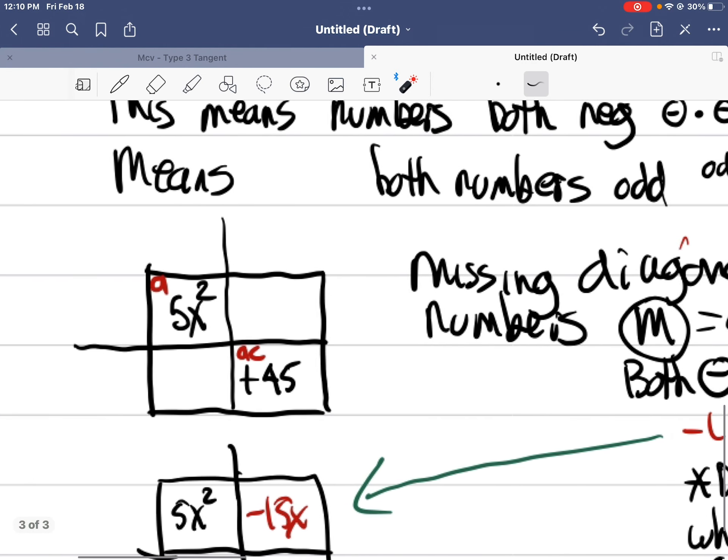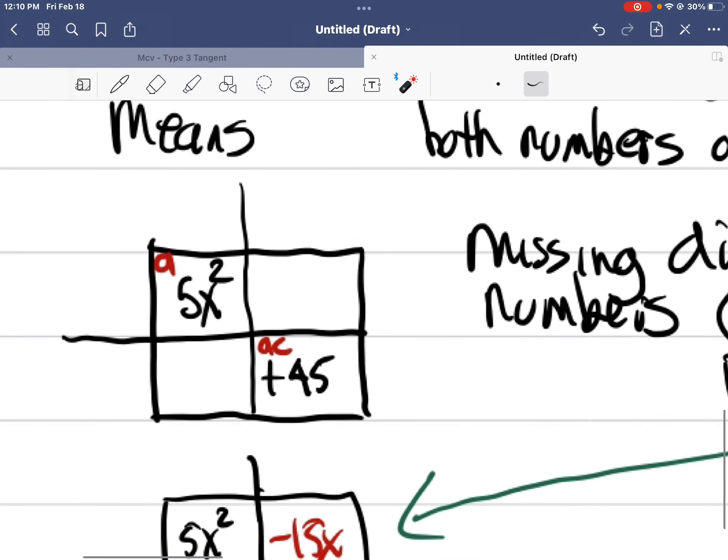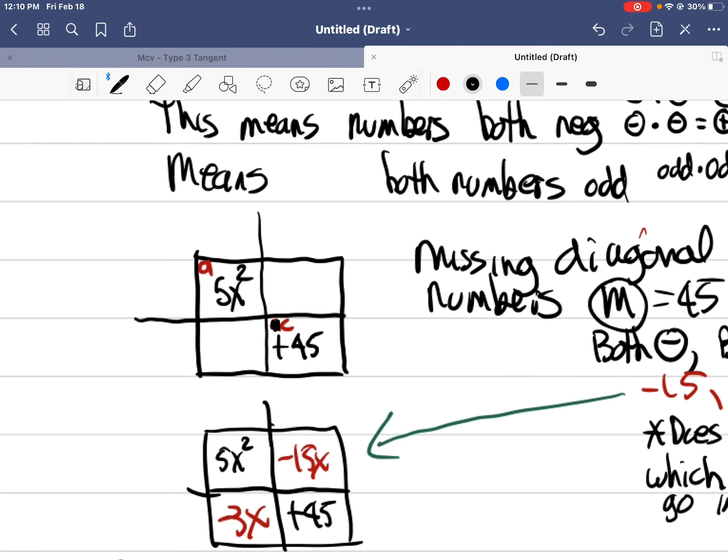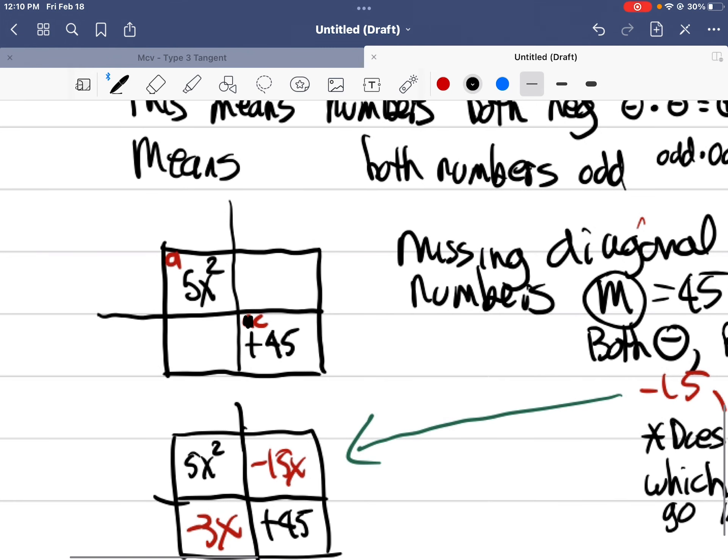So here's the way we do this. We start by putting the A term in the top left and the C term in the bottom right. So I do that and I'm missing the diagonals. You may hear some dogs barking, people are just coming into our house. My apologies. So you've got a missing diagonal here. I'm missing diagonal here. And we need to figure out what those two numbers are.